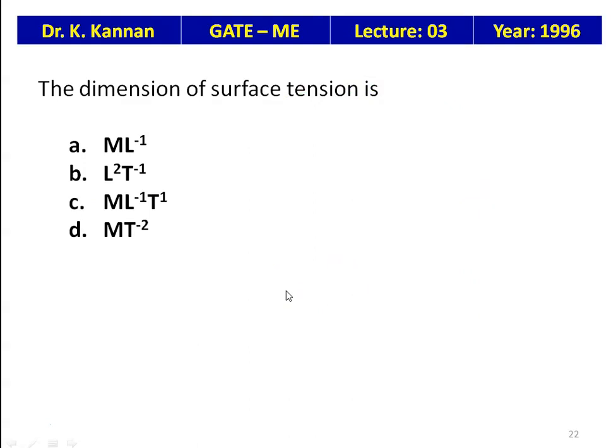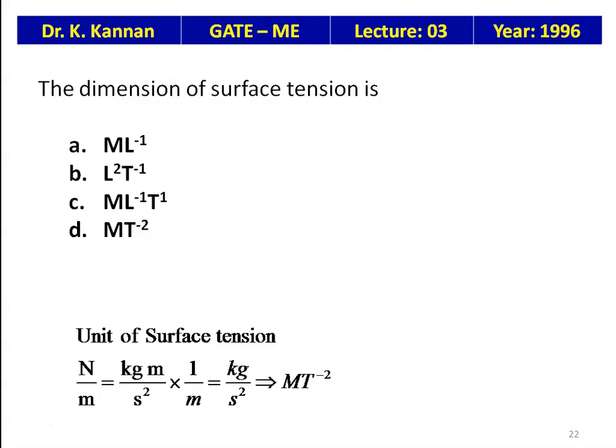The dimension of surface tension is — ML⁻¹, L²T⁻¹, ML⁻¹T, or MT⁻²? The unit of surface tension is N/m = kg·m/s² × 1/m = kg/s². Therefore the dimensions are MT⁻².